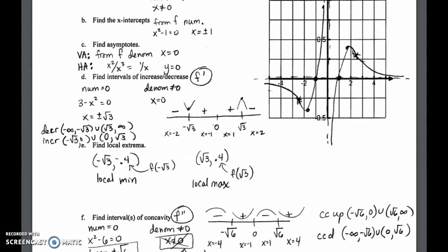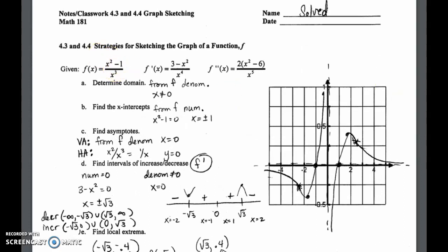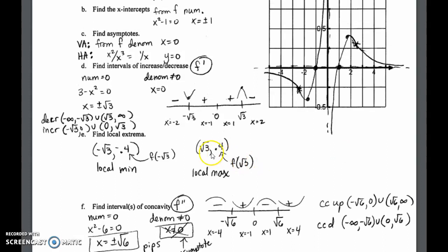The local extrema are those points, but we need the coordinate pairs. We know it's (−√3, ?) and (+√3, ?). The y-values come from plugging those x-values into the original function. For +√3, that turns out to be approximately 0.4. So we get our local min and local max, and we can plot those — that's one, two, three, four coordinate pairs plotted.